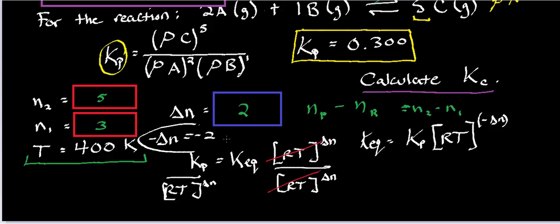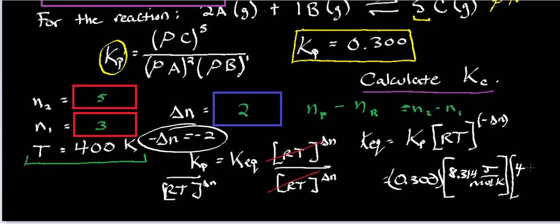Now, if delta N is 2, that means negative delta N has to be negative 2. So what I'm going to do is I'm going to take my Kp. That was 0.300. What is the ideal gas constant? Well, the ideal gas constant is going to be 8.314 joules per mole Kelvin. And the temperature is ultimately going to be 400 Kelvin. And I'm going to raise all of this stuff to the negative 2 power. Now, you'll notice the units here, they don't exactly cancel out to give any kind of units of equilibrium constants. But that's not something you need to worry about. There's some other mathematics that go into basically canceling everything to make it unitless. Don't worry about that, but just focus on actually multiplying these out and taking it to the negative 2 power.